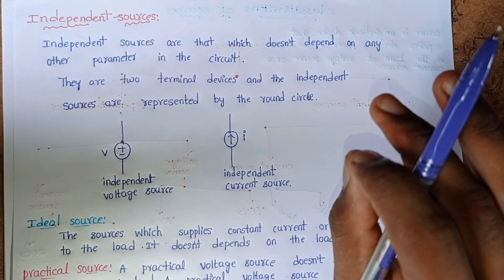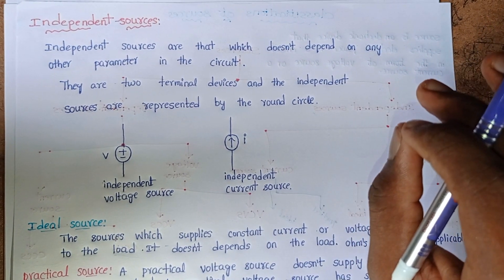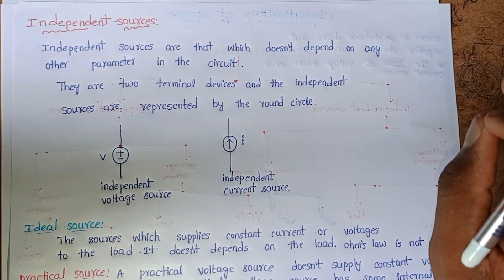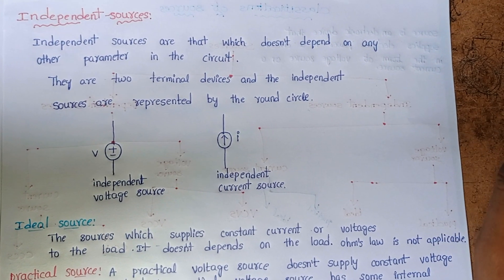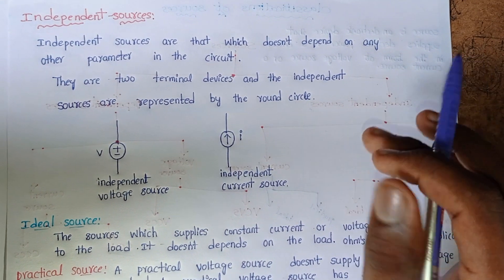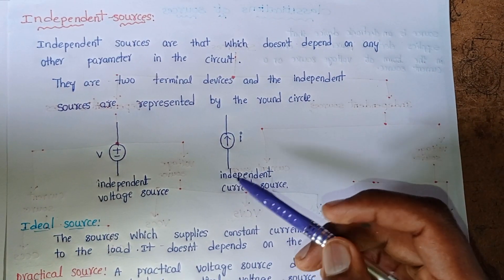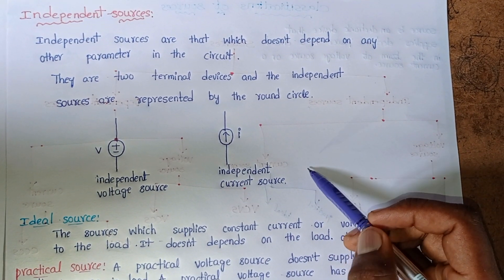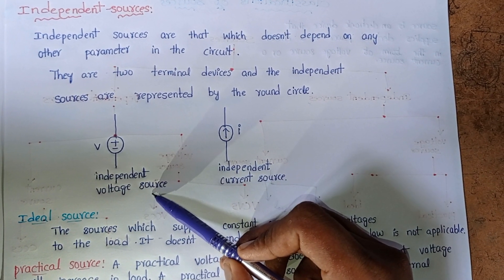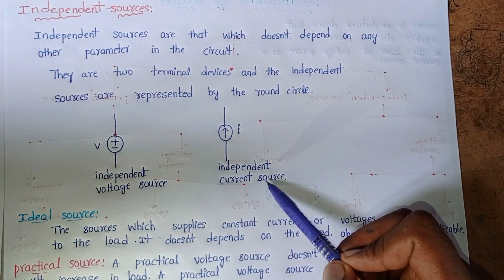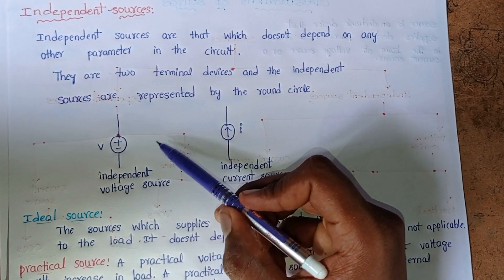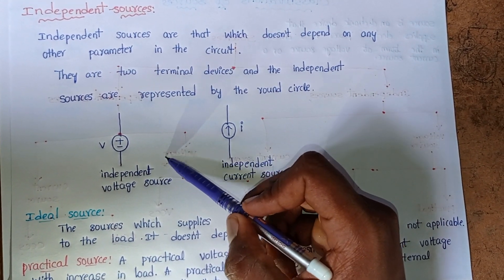Independent sources are simply the sources which do not depend on the circuit elements. These types of sources are known as independent sources. We represent independent sources using a circle symbol. Independent voltage sources and independent current sources are both represented as circles.